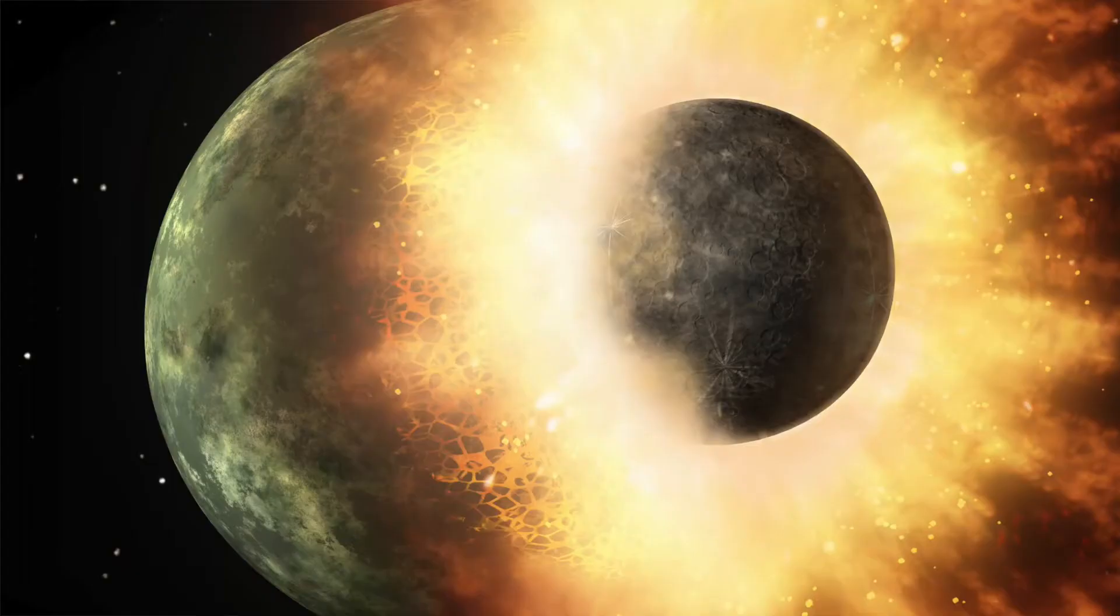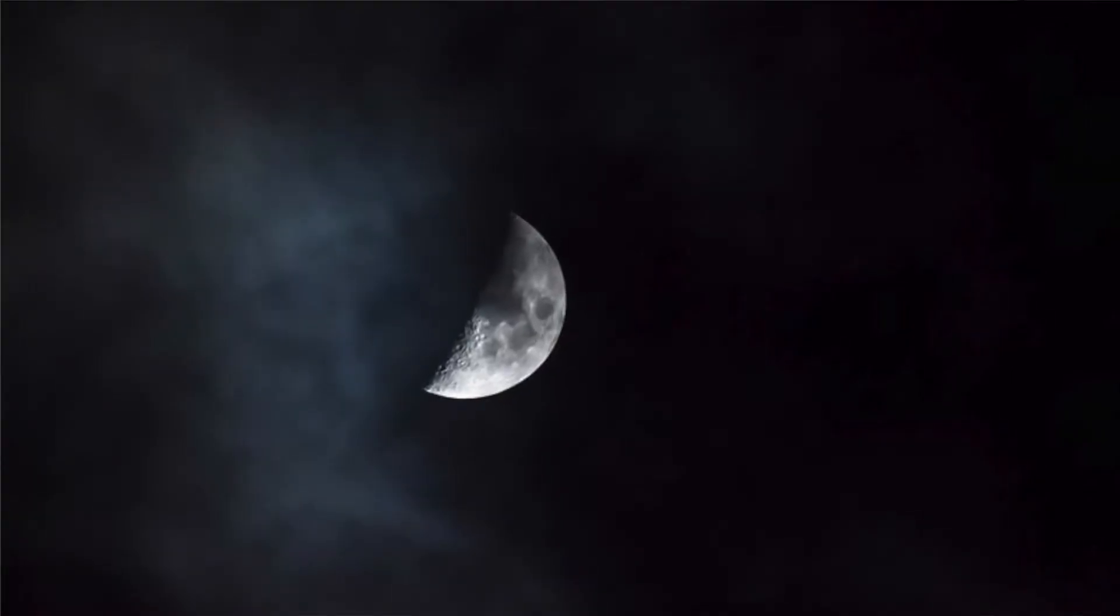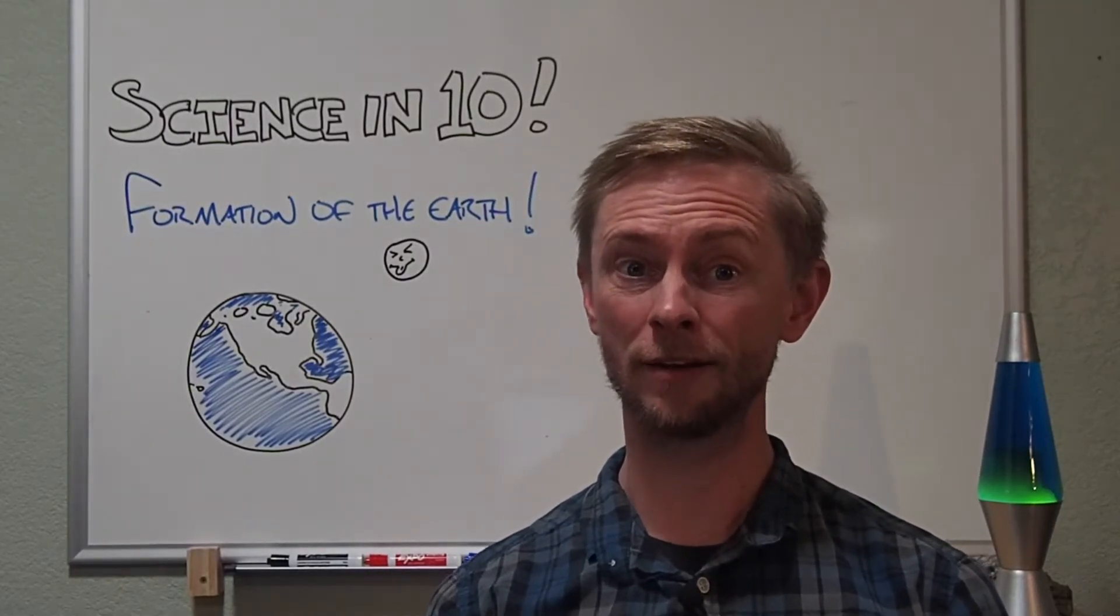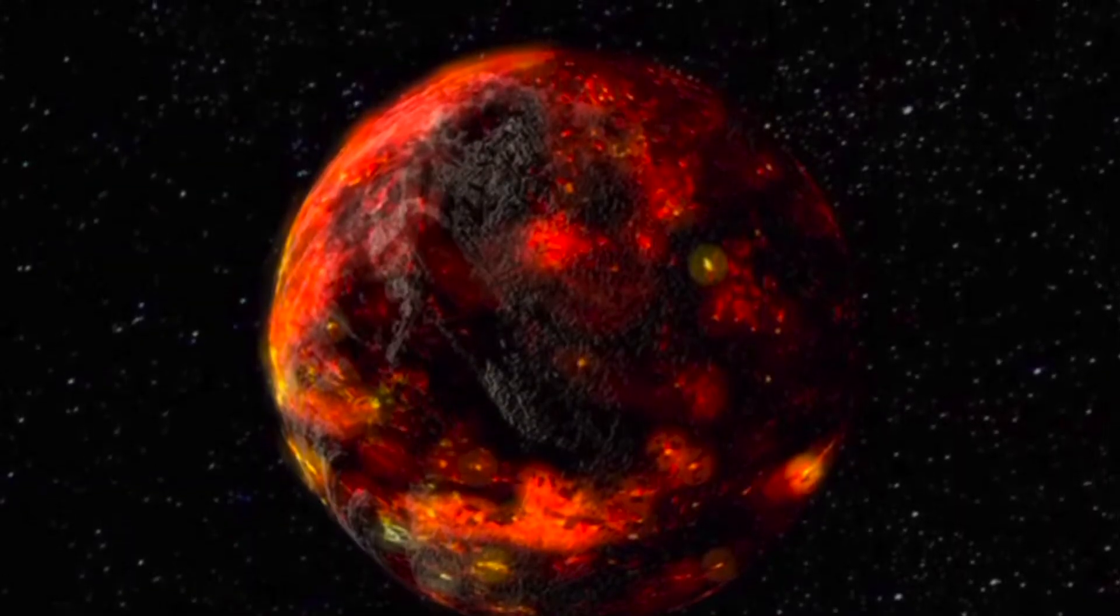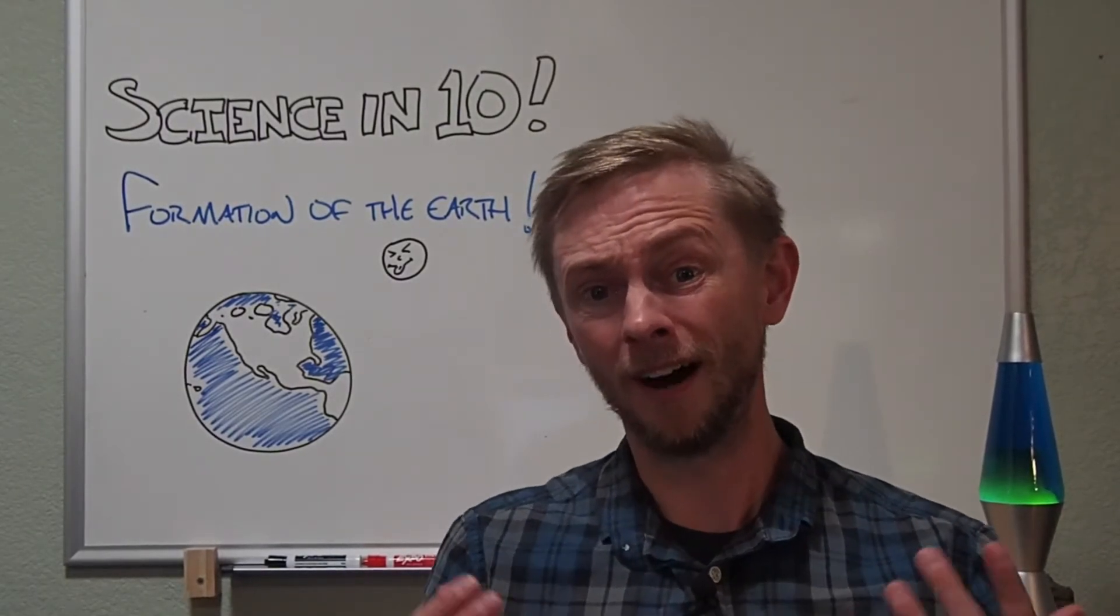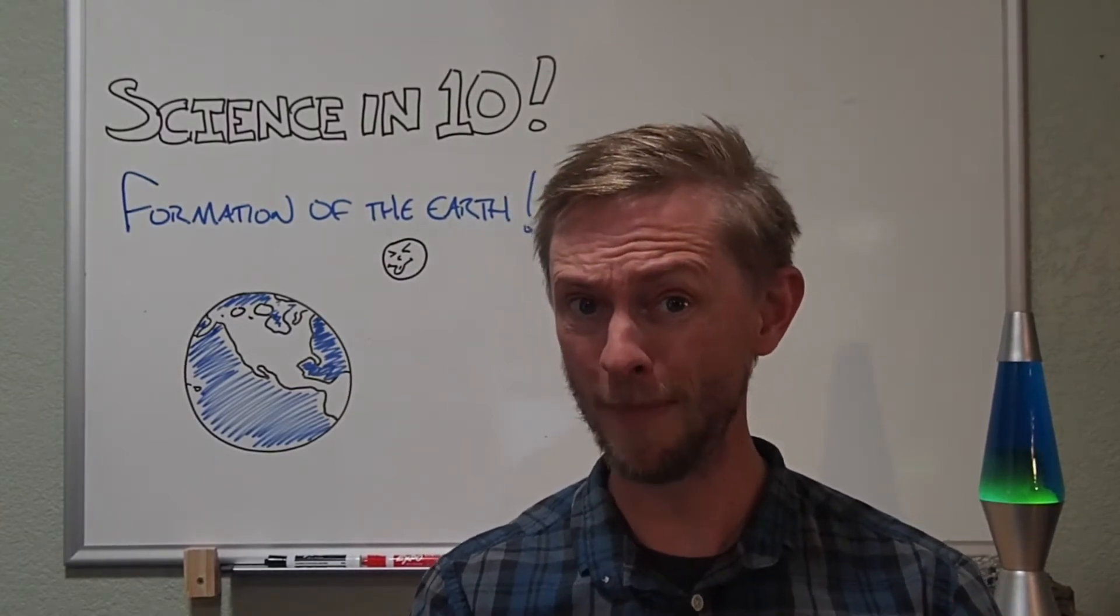One impact by a Mars-sized body, known as Theia, knocked out enough material to form our Moon. All these constant impacts, plus the decay of radioactive elements within the early Earth, created enough heat to keep the planet in a near-molten stage. So what happened next? Obviously, right now, we don't live on a giant ball of magma.